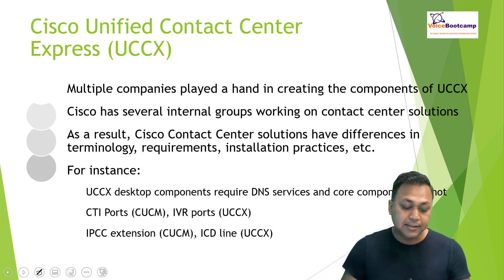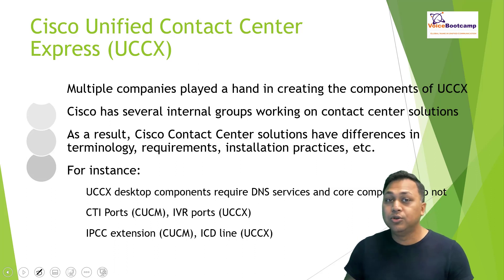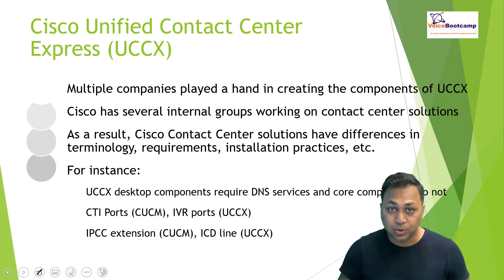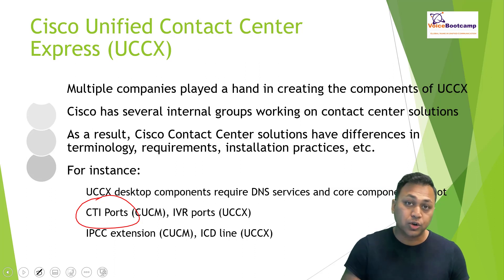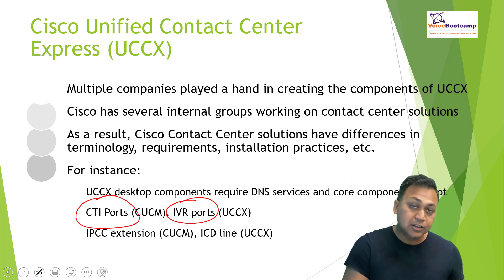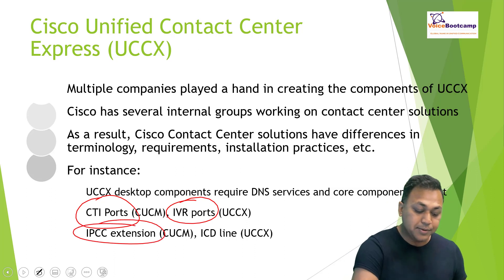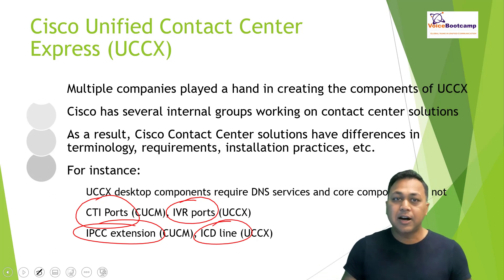For instance, if you're using the Cisco UCCX desktop component, it heavily relies on a normal DNS server with certain settings that need to be in place. Whereas if you're using the Cisco UCCX core application server itself, you don't really need DNS to log in. UCCX uses CTI ports to register a number of channels with Cisco Unified Communication Manager. The equivalent on the UCCX side is called an IVR port. In the call manager or call control system, the extension is called an IPCC extension, whereas on the UCCX side it is called an ICD line — identified differently, but they work together to ensure a full solution.